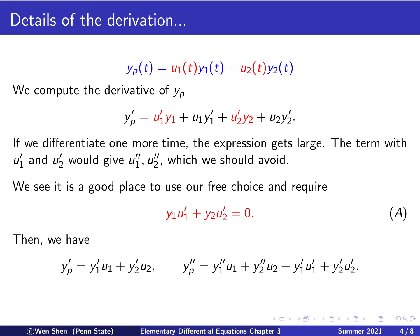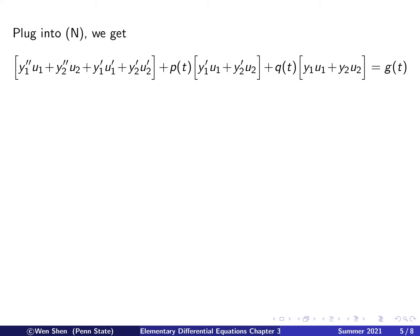With constraint A, those two terms add up to zero, so yp prime simplifies to just the two black terms: y1 prime u1 plus y2 prime u2. We then differentiate one more time using the product rule, giving yp double prime: y1 double prime u1 plus y2 double prime u2 plus y1 prime u1 prime plus y2 prime u2 prime. Now it's time to put all these derivatives back into the differential equation. We plug them into the non-homogeneous equation and obtain a large expression.